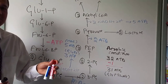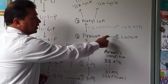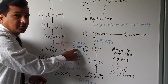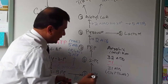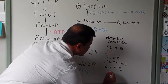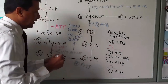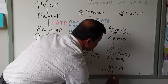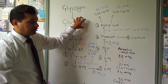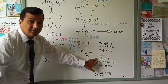If the malate-aspartate shuttle mechanism is used instead, the cytoplasmic NADH yields 5 ATPs instead of 3. So the total becomes: 4 + 5 + 20 + 5 = 34 ATPs produced, minus 1 ATP consumed, giving a net of 33 ATPs. So glycogen degradation yields either 31 ATPs with glycerol phosphate shuttle, or 33 ATPs with malate-aspartate shuttle, under aerobic conditions.